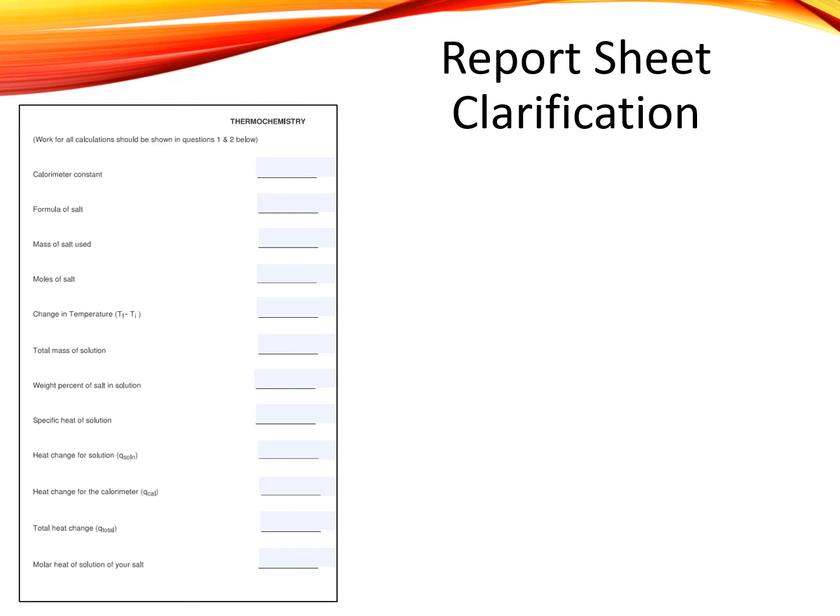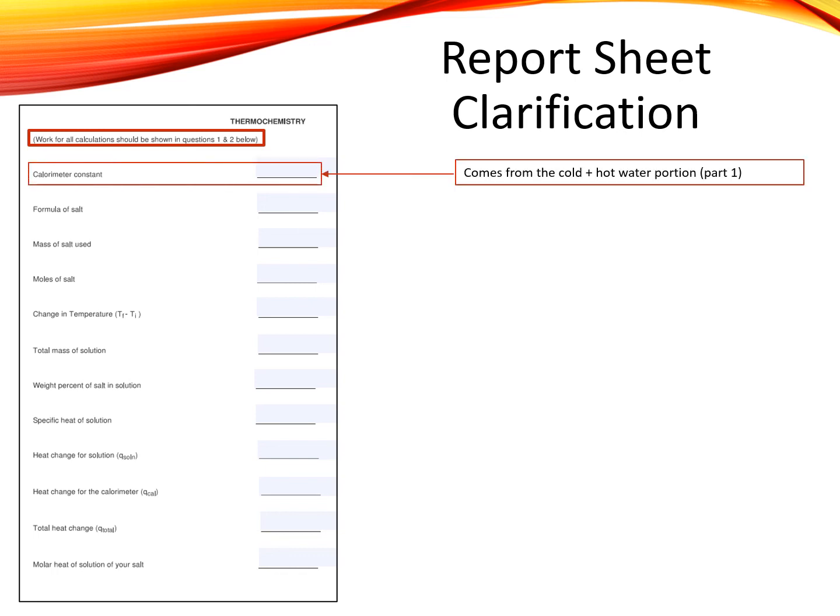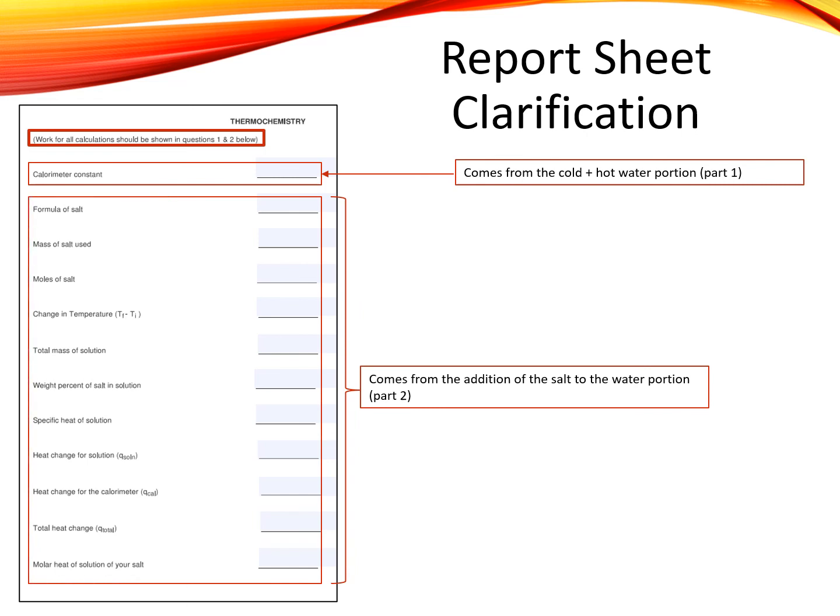I wanted to clarify some things on the report sheet. If it says show your work, you should show your work. Be sure that you do that for questions number one and two below this list. The calorimeter constant, C-cal, comes from the cold and hot water portion. All of the rest of this comes from the salt plus water portion, part two.